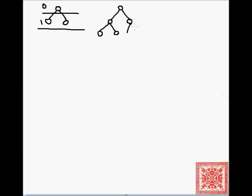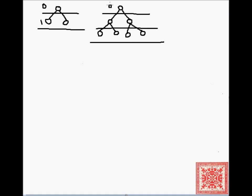Here's another example of a complete binary tree with three levels: level 0, level 1, and level 2. All possible positions are filled with nodes. So, 2 to the 0 — one node on level 0; 2 to the 1 — two nodes on level 1; and 2 to the 2 — four nodes on level 2.